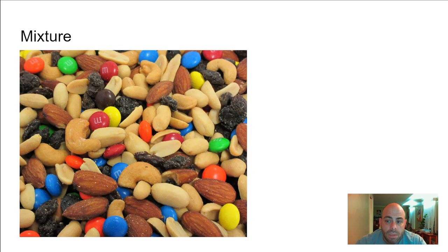It's about mixtures. A mixture is just the combination of any two or more substances. This is a mixture of like M&Ms and raisins and nuts. It's easy. It's just really simple. There's all different kinds of mixtures.